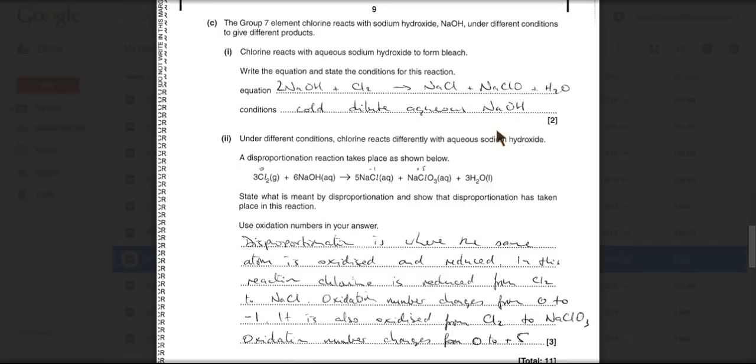Okay, so now a reaction straight out of the notes. The equation for the reaction between sodium hydroxide, aqueous sodium hydroxide and chlorine. There it is there. So we get NaCl, NaClO and H2O. And remember we need two NaOHs to balance the equation. And the conditions for that one, we need cold dilute aqueous sodium hydroxide.